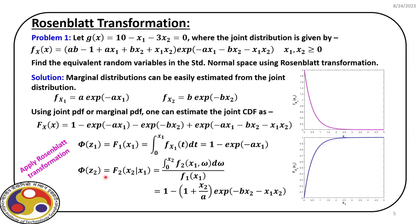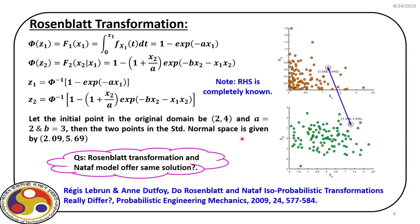Once we have these two expressions, we can find Z1 and Z2 by taking Phi inverse of the right hand side. Z1 is Phi inverse of the derived expression and Z2 similarly. If we know the parameters A and B, we can estimate Z1 and Z2 for every X1 and X2.